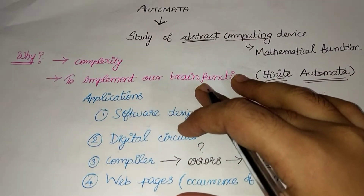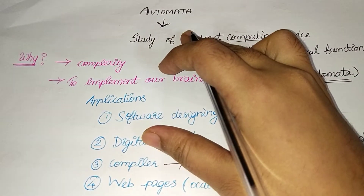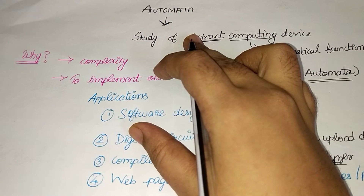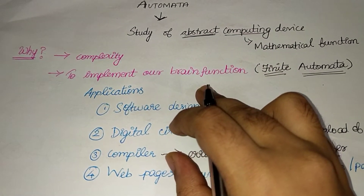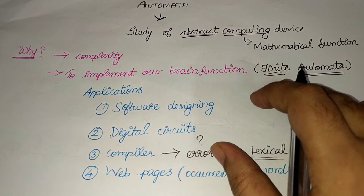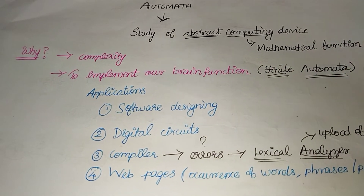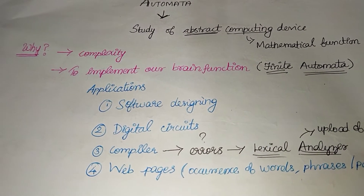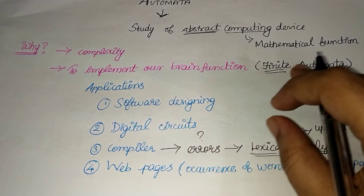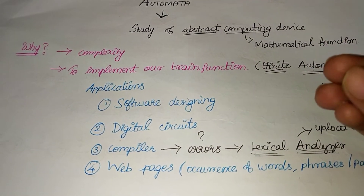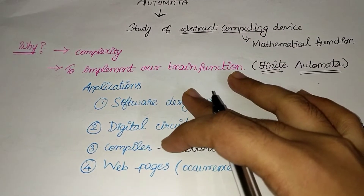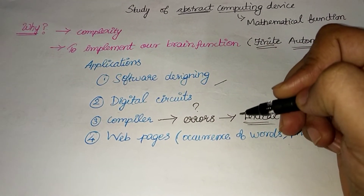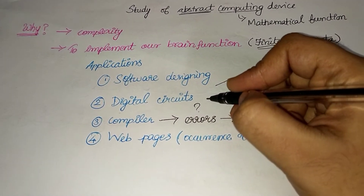Here we are going to use Automata in ToC. How does our brain function work? It is a particular machine that takes a problem and solves it. That is Finite Automata. You use Finite Automata in software designing and in Digital Circuits.